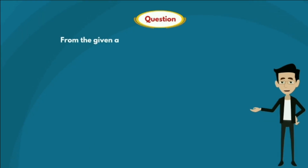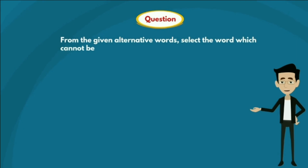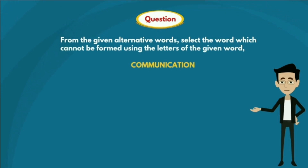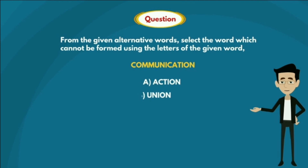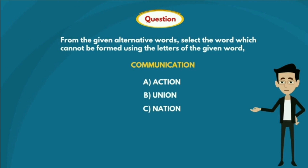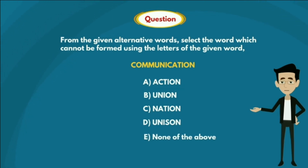Question. From the given alternative words, select the word which cannot be formed using the letters of the given word, COMMUNICATION. Options are: Option A — ACTION, Option B — UNION, Option C — NATION, Option D — UNISON, and Option E — none of the above.